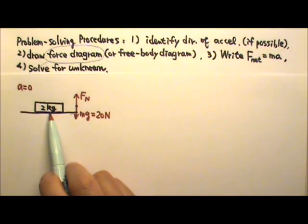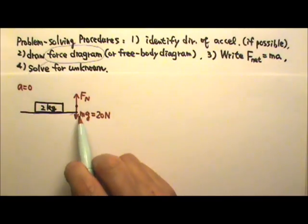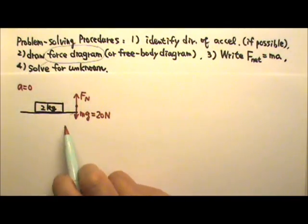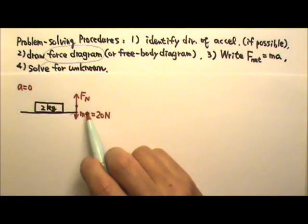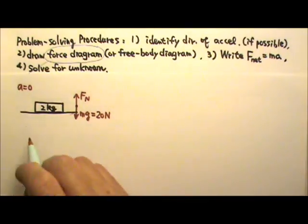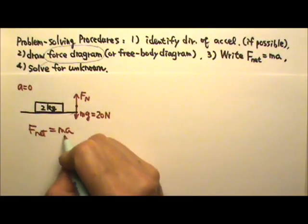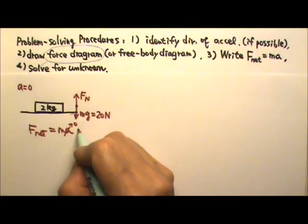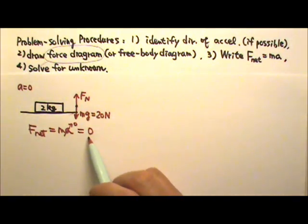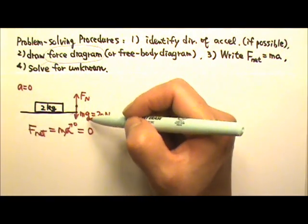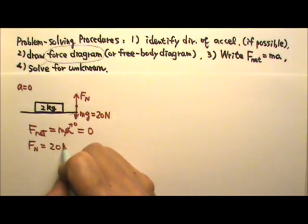The book is not touching anything else, so those are all the forces we have. Next step: write the net force equals Ma. Since the acceleration is zero, the net force is zero. If these two forces must give a net force of zero, the up and down must be equal — so the normal force must equal 20 newtons.